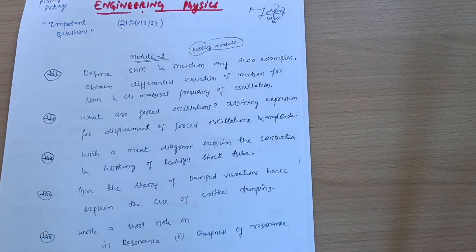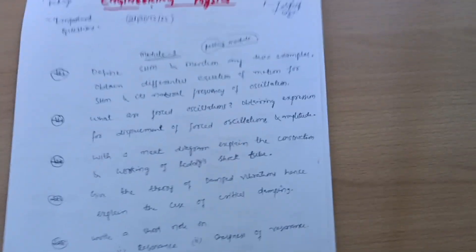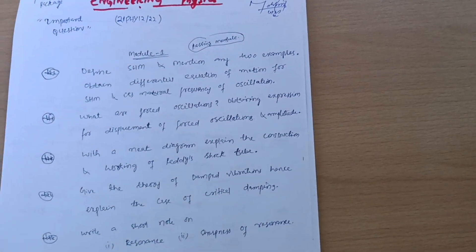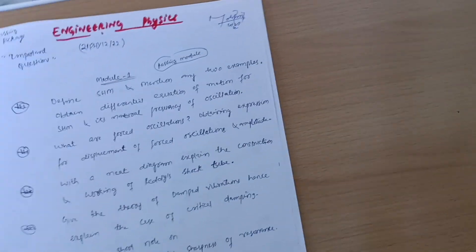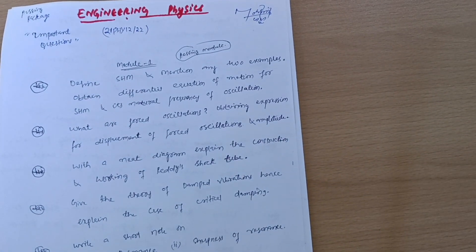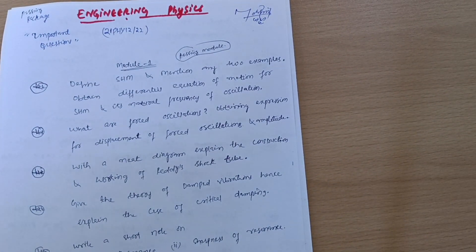You should practice numericals also, which are very simple ones. You can leave the tough numericals if you are thinking that numericals are tough from certain modules, so you can leave them. But Module 1 numericals are very easy and also from Module 5 you can go through the numerical part.